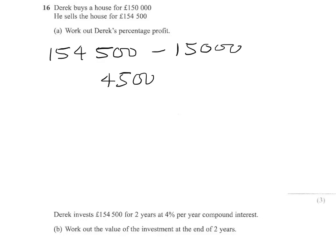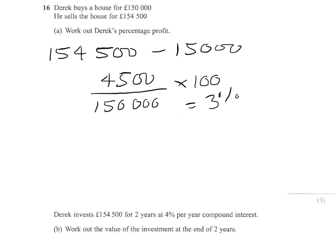We now need to express that profit as a fraction of the amount he bought the house for. £150,000 is what we started with, and £4,500 is what we made. To change that fraction into a percentage, we multiply by 100. On a calculator paper, tap that into the calculator and get your answer, which is 3%. So the answer is 3% profit.